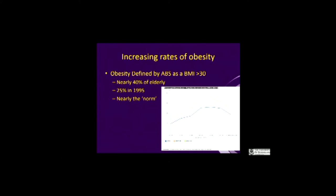Rates of obesity — we've talked about this already but this is the important range for us, the older population. From 25% being obese in 1995, up to 40% of the elderly are now obese, which is nearly the norm. These are the people we're dealing with every day.